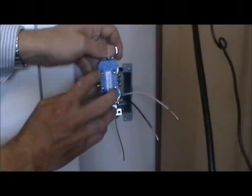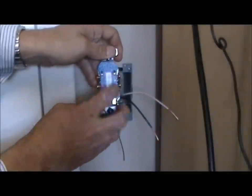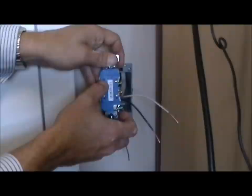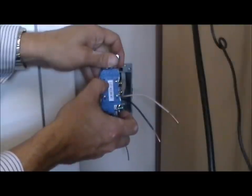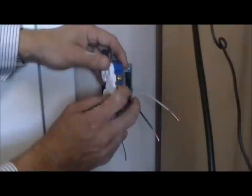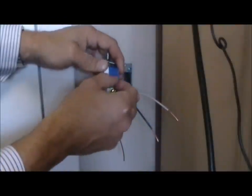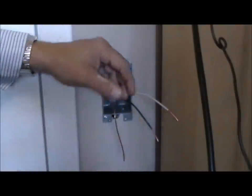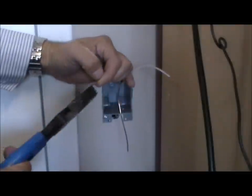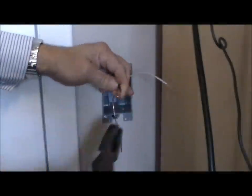Now, modern outlets have quick connects in the back. As a company, we do not use them. They have a tendency to get loose, and they trip our fault breakers. So what we do is we make the wires so they go around the screws, which is a much better and tighter connection. To do that, you want to put a half twist here on your wire.